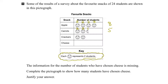Let's look at crackers. The smiley face would be two students, two students there, for a grand total of four students. So how many students do we have so far liking these various snacks? Eight plus five plus four would give us 17 students so far.